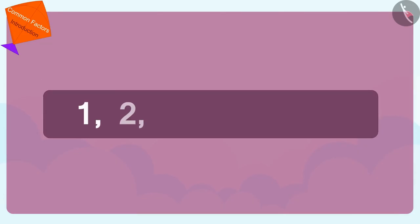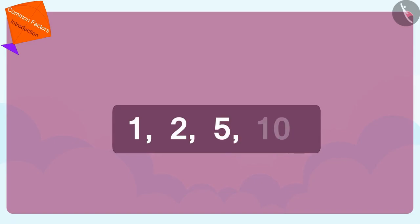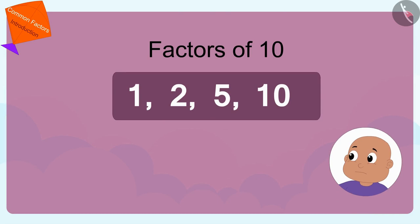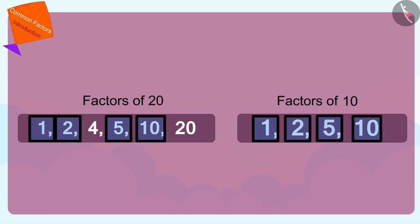He first wrote the factors of 20 in this way. Now Babloo wrote down the factors of 10. Yes! These numbers 1, 2, 5 and 10 are factors of both 20 and 10.